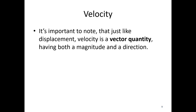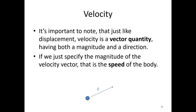It is important to note that just like displacement, velocity is a vector quantity having both a magnitude and direction. If we specify just the magnitude of the velocity vector, that is the speed. So if a car is moving at 60 miles per hour, that is a speed. If it's moving 60 miles per hour directly north, that is a velocity — it has both a magnitude and a direction.